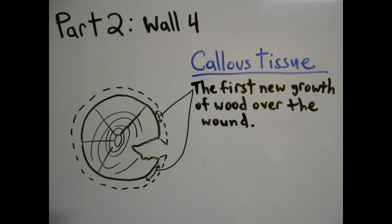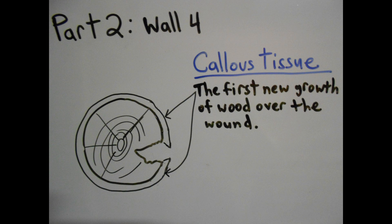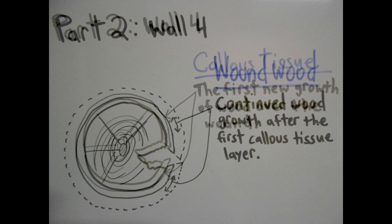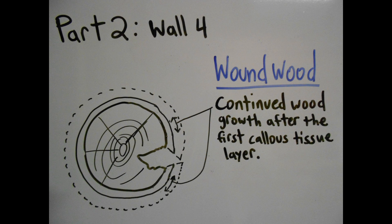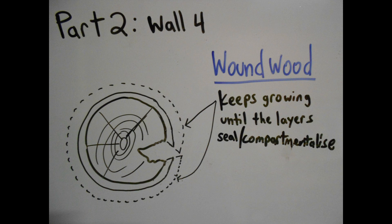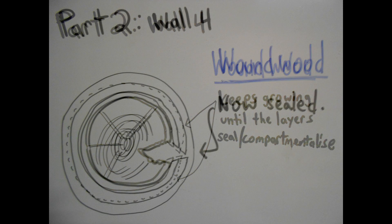The second part of the defensive process is described as wall four. The first new growth of wood over the wound is called callus tissue. It is a barrier zone consisting of a new layer of cells that separate the diameter of the tree at the time of wounding from the new tissue formed. Wall four is described as very chemically strong but physically weak, but basically it is still described as the strongest of all walls and the tree's best defense mechanism. Wall four will continue to grow until the layers seal or compartmentalize the wound. The continued wood growth after the first layer of new growth callus tissue is called wound wood.